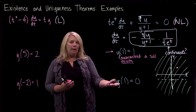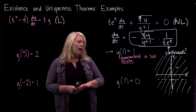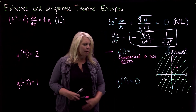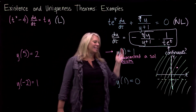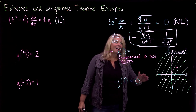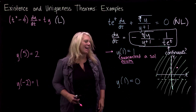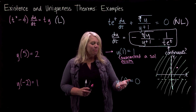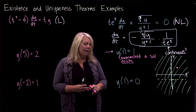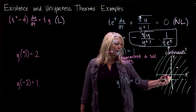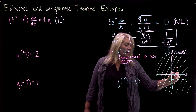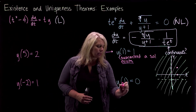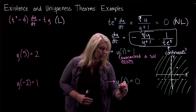For this second one, y of 1 equals 0, when t equals 1 and y equals 0, that point is also in the interior of the region. So we are also guaranteed that a solution exists for this initial condition.